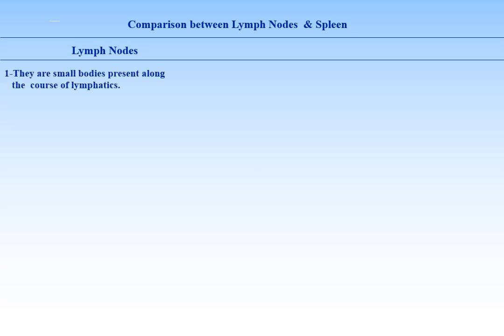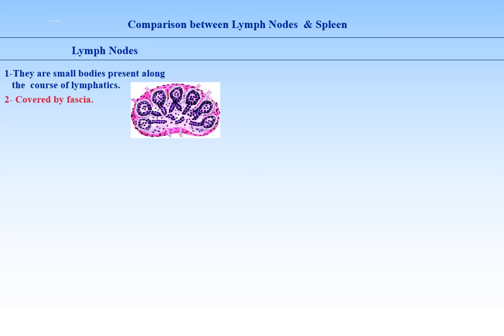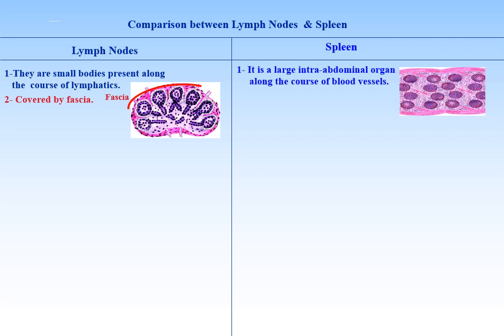Comparison between lymph nodes and spleen. For easy differentiation between both, we consider site, structure, and function of each, including structure of stroma and parenchyma. Lymph nodes are small bodies present along the course of lymph vessels, covered by fascia. The spleen is a large hemolymphatic intra-abdominal organ present along the course of blood vessels, covered by peritoneum.